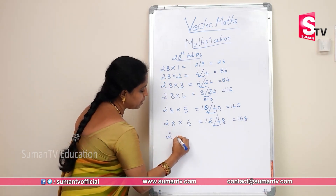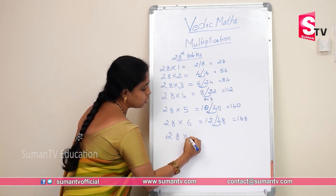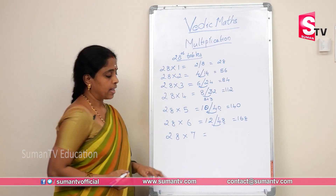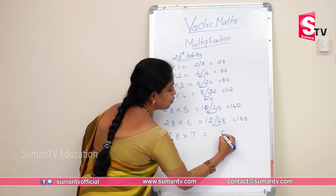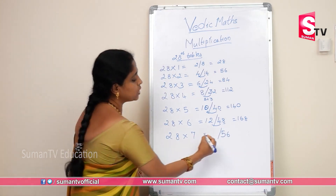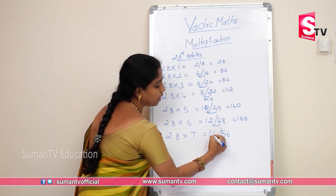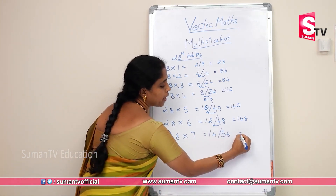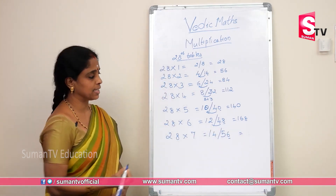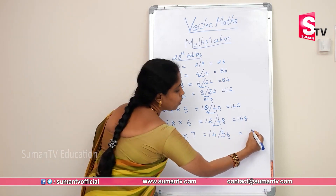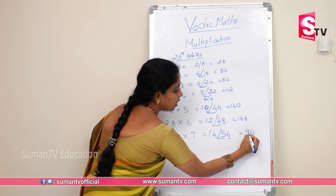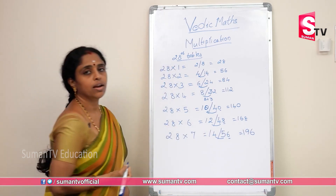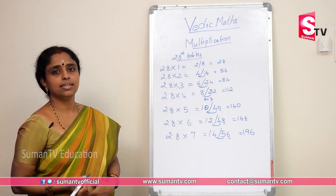Again, 28 into 7. 7×8 = 56. 7×2 = 14. In units place, write 6. Then 5 plus 4 = 9. Carry this 1. The answer is 196.